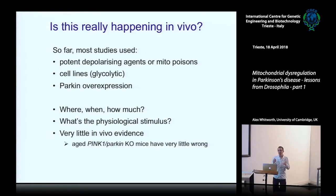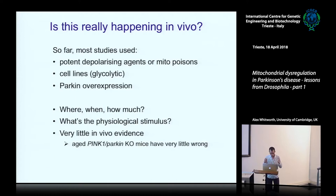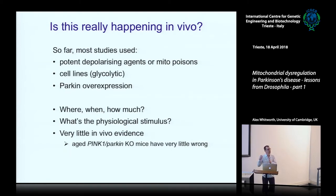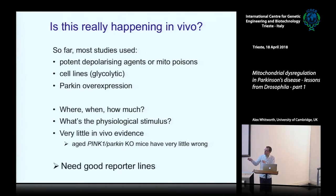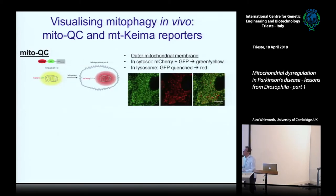A rather tricky point is that if this process of mitophagy is so tremendously important for maintaining healthy mitochondria and healthy neurons, knockout mouse models for Parkin and PINK1 have almost nothing wrong with them, even to extreme age. So at this point we decided that we needed some good reporter lines for mitophagy. This is a study that we published just a few weeks ago that we've been working on for a little while.